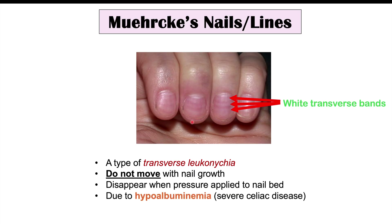This particular nail finding is due to hypoalbuminemia — a low level of albumin in the blood — and is quite rare in celiac disease, occurring only in very severe untreated cases. This is where there is so much inflammation that patients are not absorbing amino acids sufficiently for the liver to produce albumin. We can also see this nail finding in liver conditions.